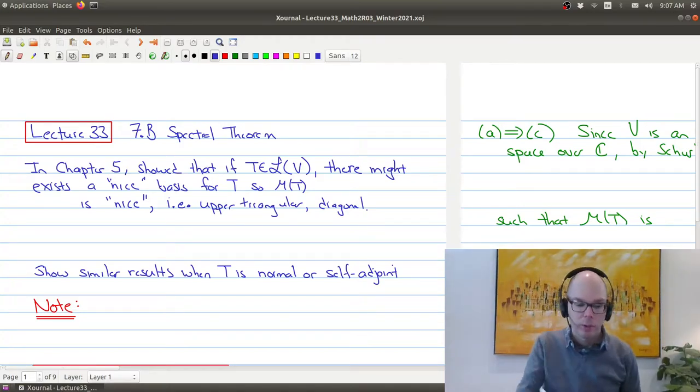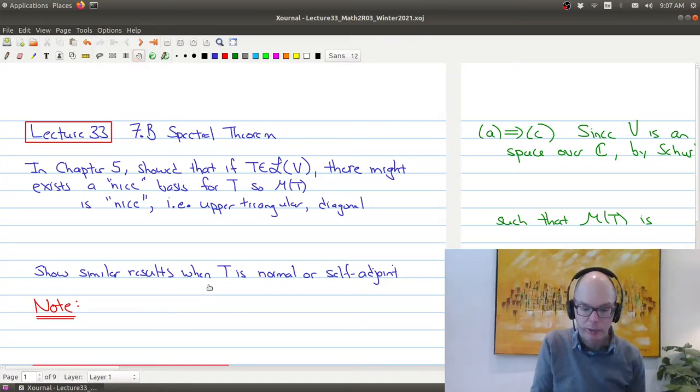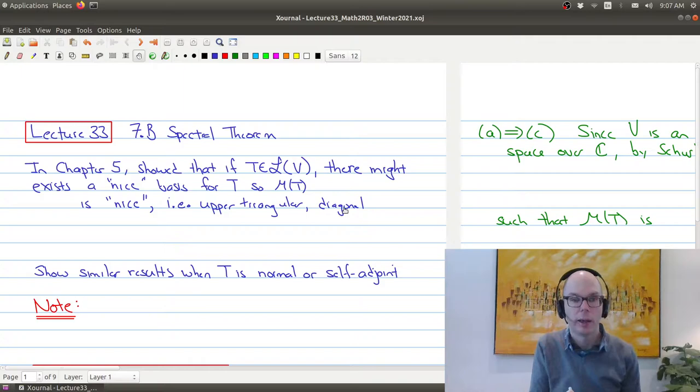And what we want to do today's lecture is show that if we assume that our operator is normal, or if we assume that it's self-adjoint, then we can actually show that right away, that we can guarantee bases so that we can make things to be diagonal. So that's kind of the thing that you want to keep in the back of your mind.